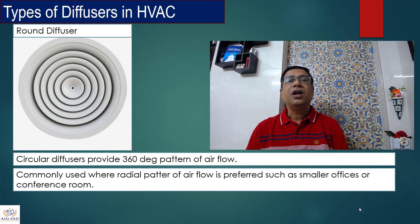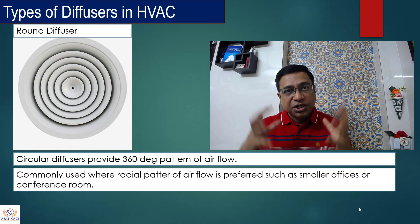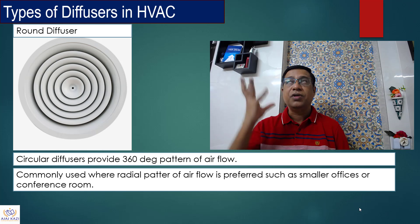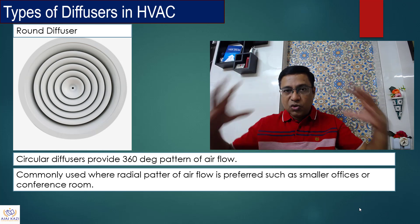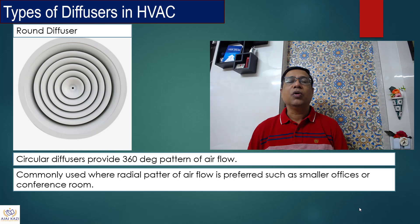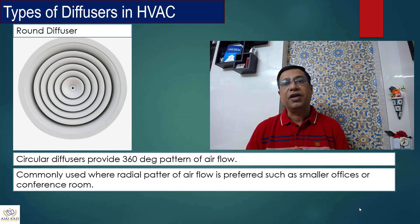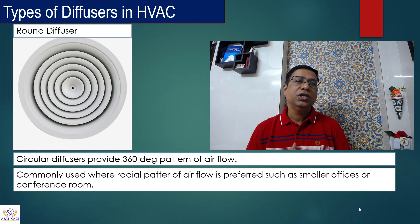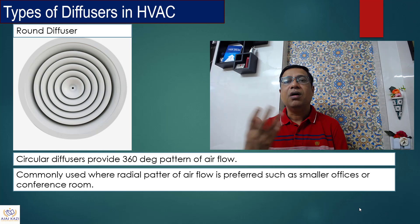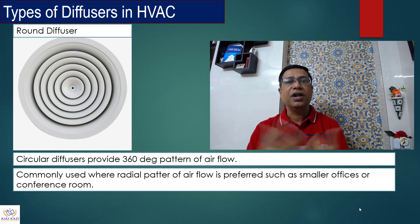The second important diffuser is a round diffuser, which provides a 360 degree pattern of air. When placed in the center of a room, you get a 360 degree pattern of air covering almost every area of the room. It is commonly used where a radial pattern of airflow is preferred — smaller offices, conference rooms. Architects generally prefer this for its look; if they want a round element in the ceiling, they would prefer this type of diffuser.